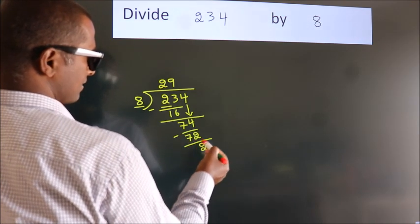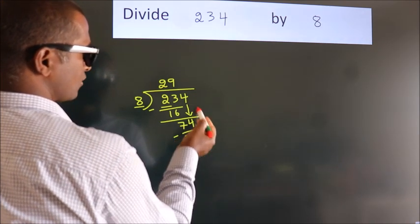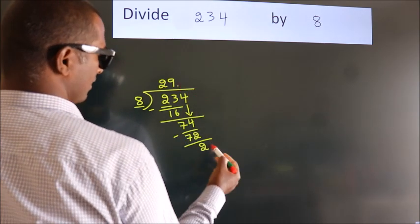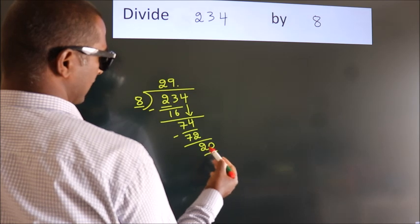After this, no more numbers to bring down. So what we do is, we put a dot and take 0. So, 20.